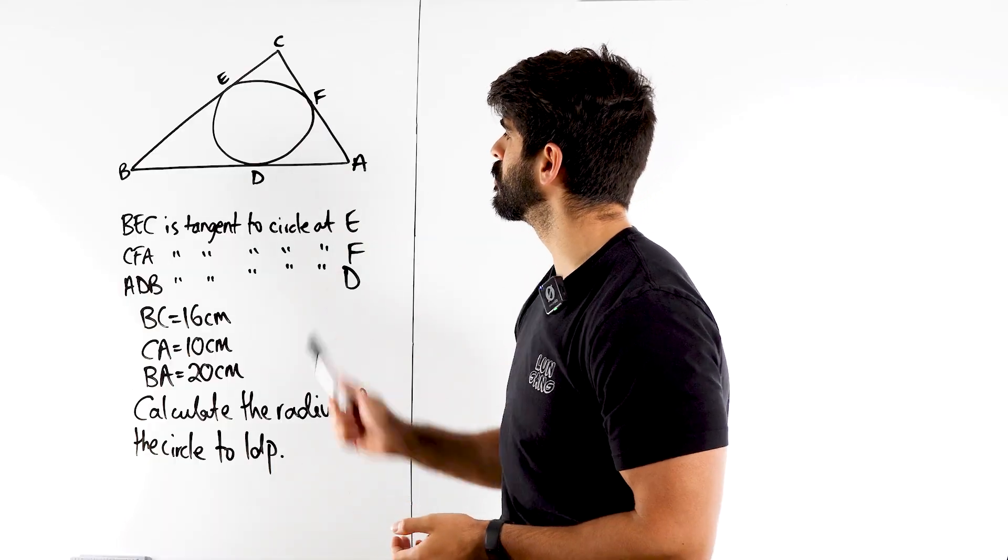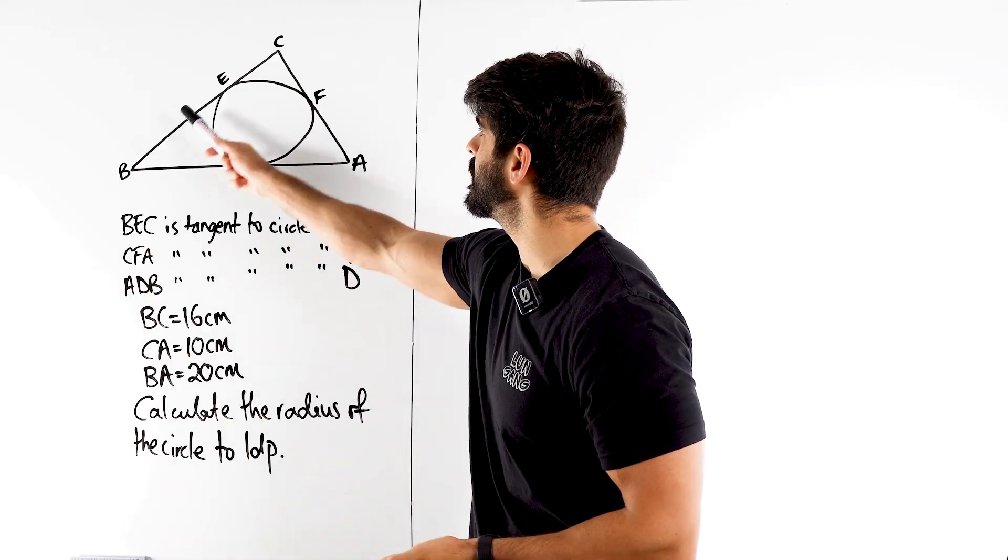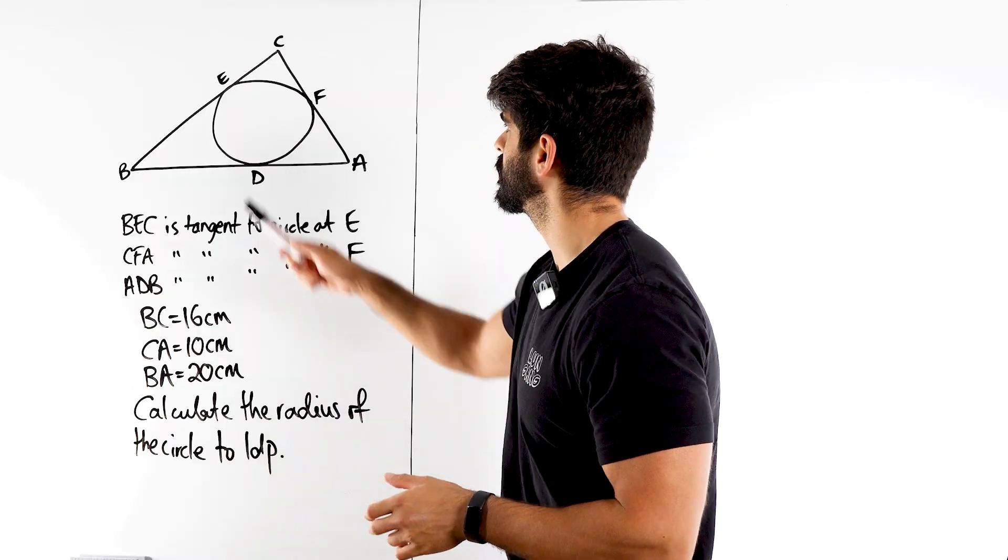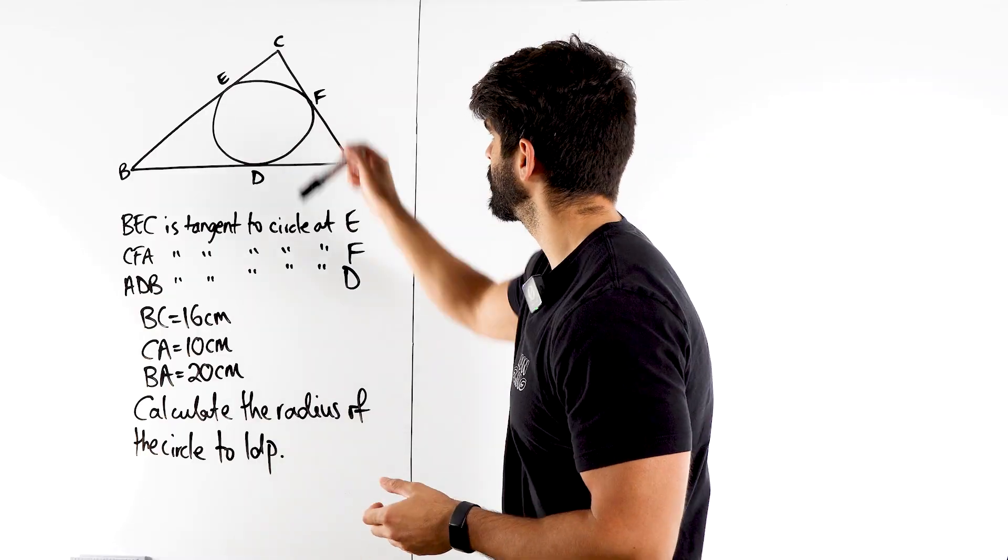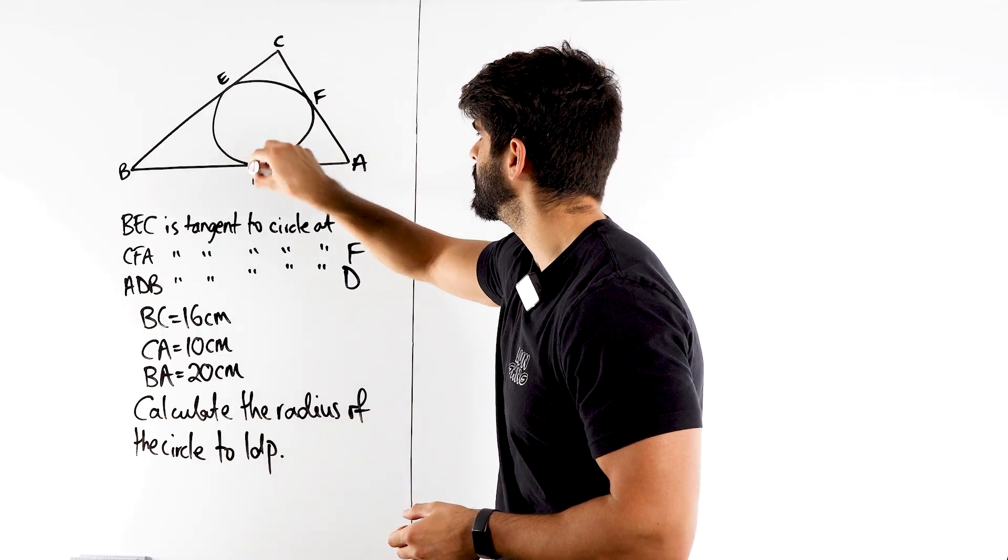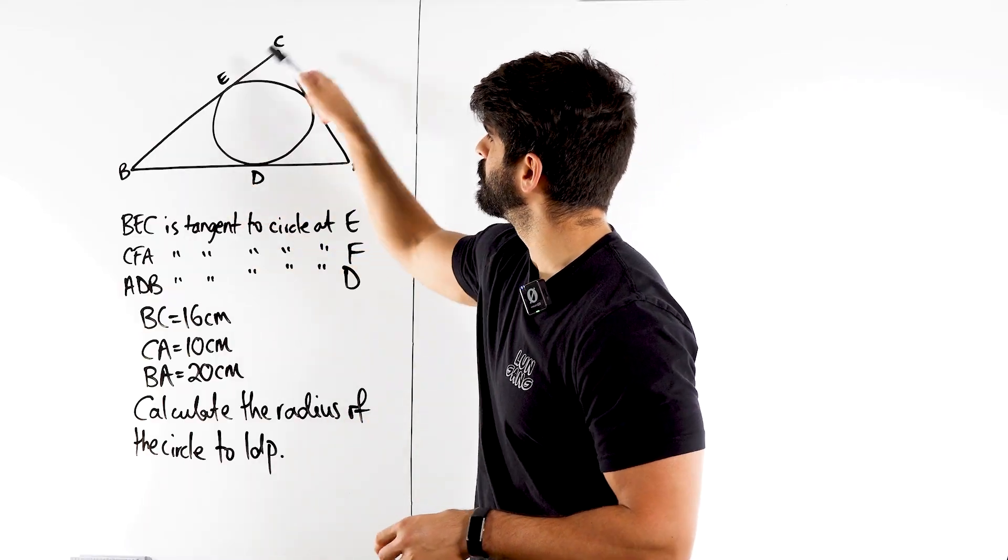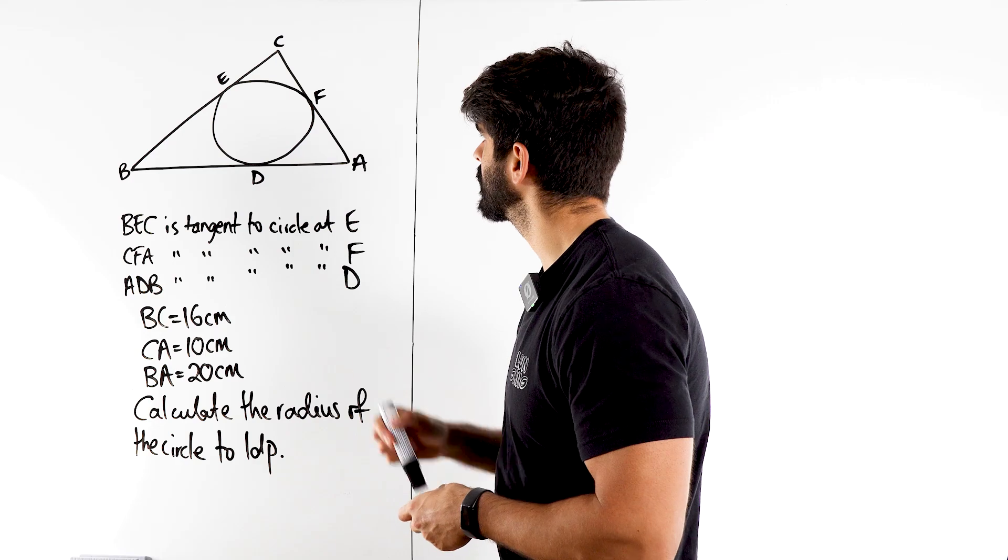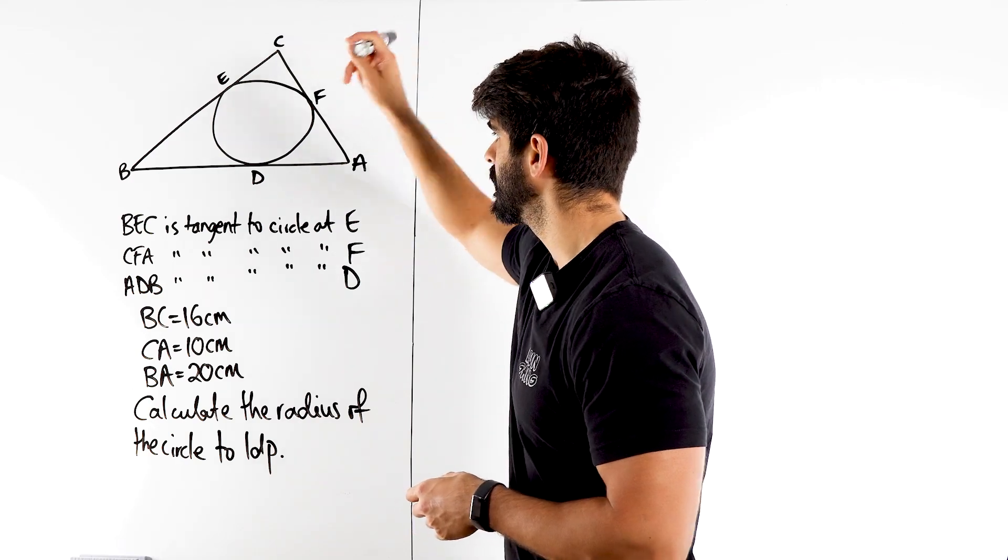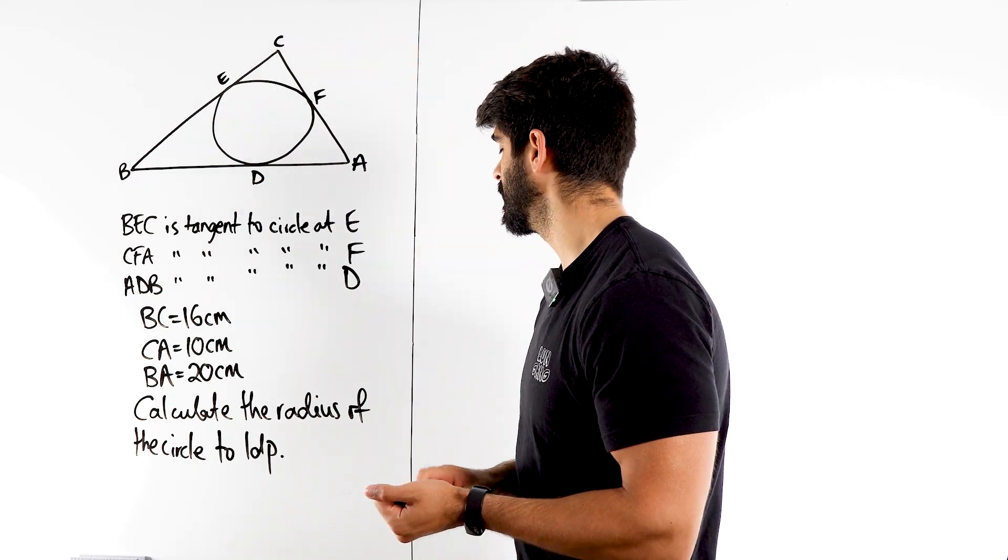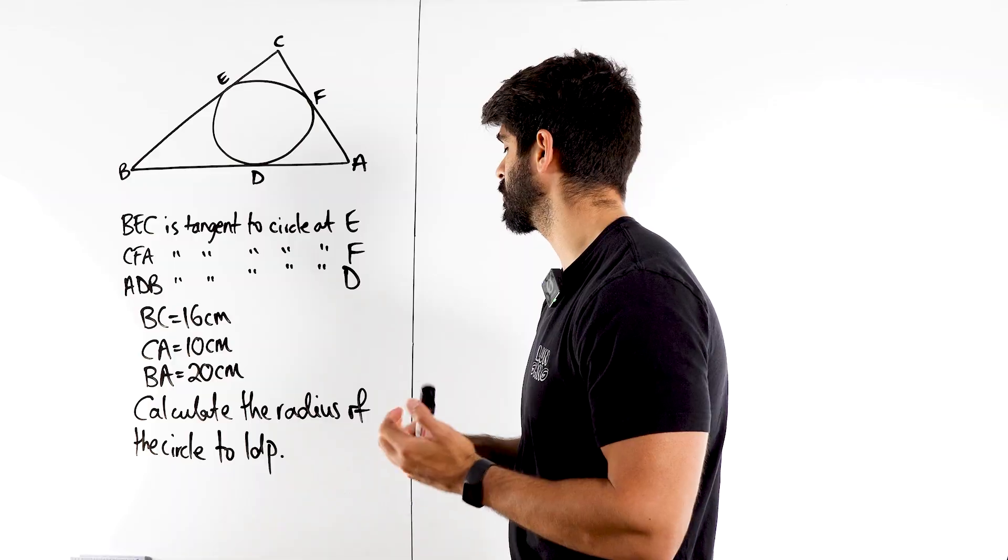So we have a triangle, we have a circle and it says BEC is a tangent to the circle at E, CFA is a tangent at F, BDA is a tangent at D. We also have the length of BC is 16, the length of CA is 10 and the length of BA is 20. Calculate the radius of the circle to one decimal place.